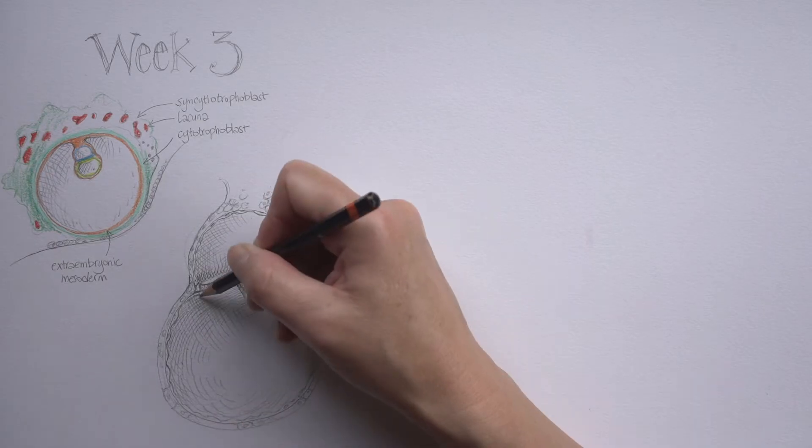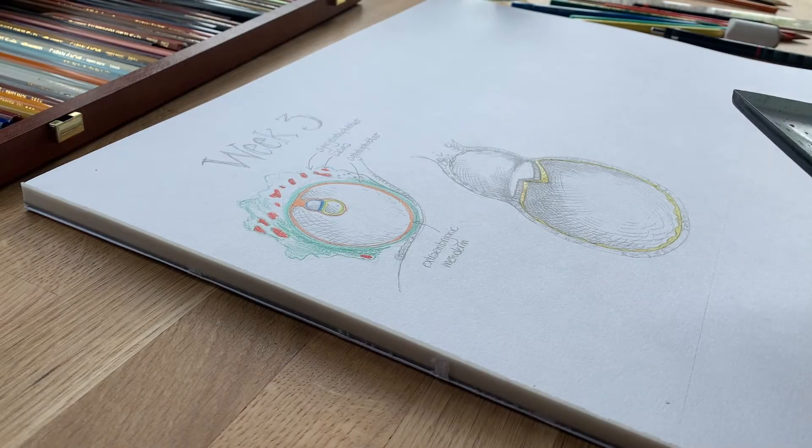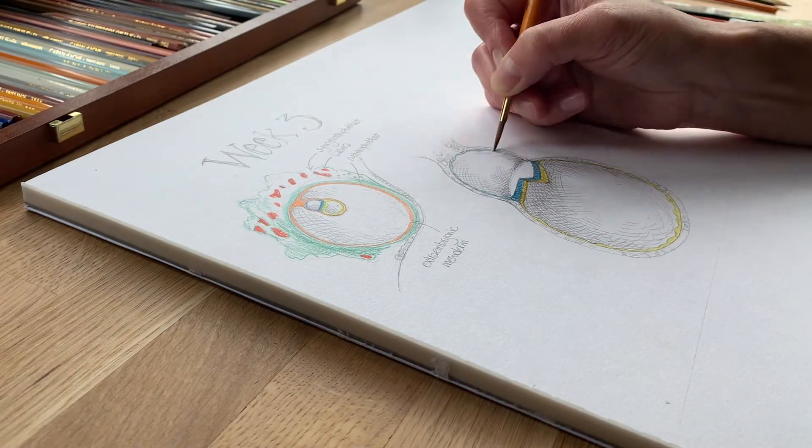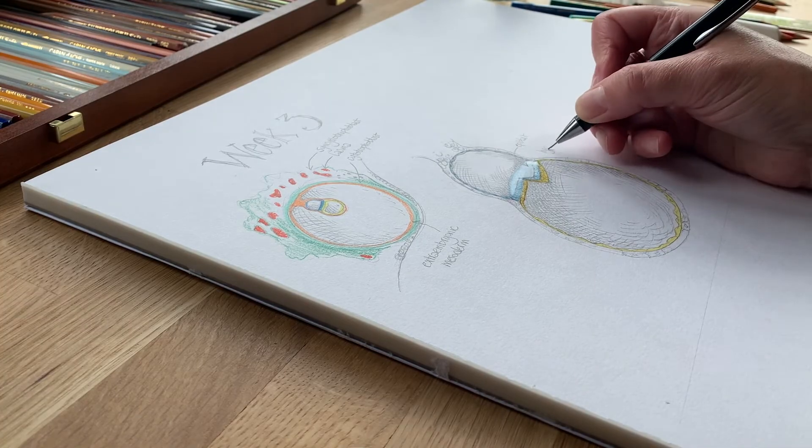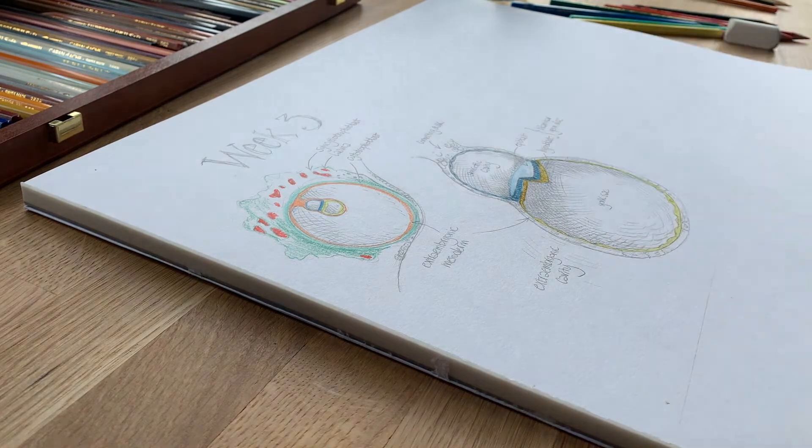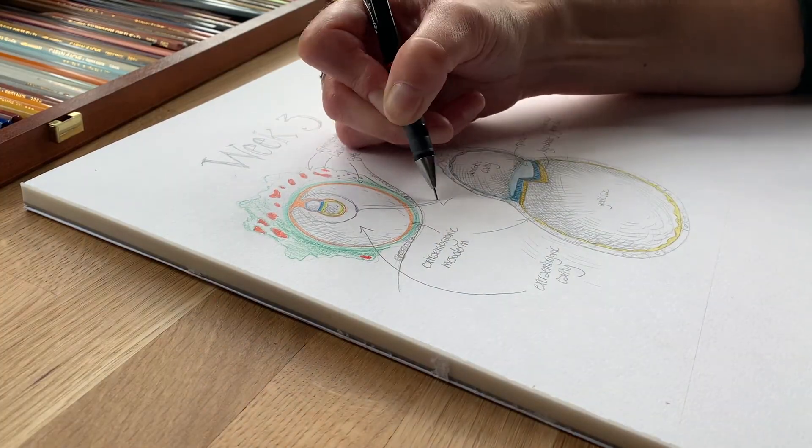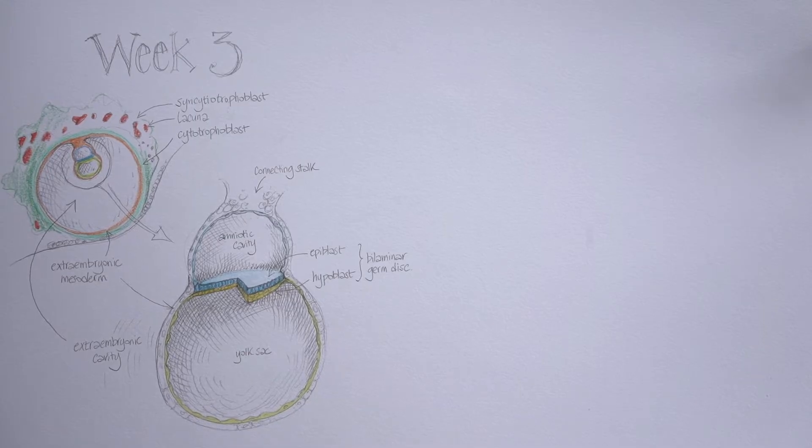So there it is. The cavities associated with this bilaminar germ disc are the amniotic cavity, which sits above the epiblast, and the yolk sac, which hangs down below the hypoblast and is actually lined with cells which have derived from the hypoblast itself. That's why I've colored them in yellow, the same as the hypoblast. And the epiblast and the lining of the amniotic cavity are in blue. The second picture that I've drawn here is just an enlargement of that smaller area in the first picture with the germ disc at its center, and that is what's going to form the body of the embryo itself.